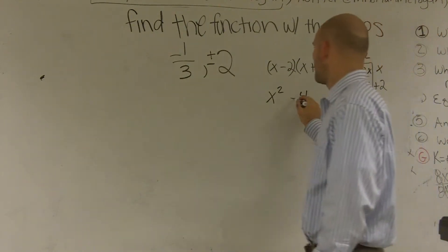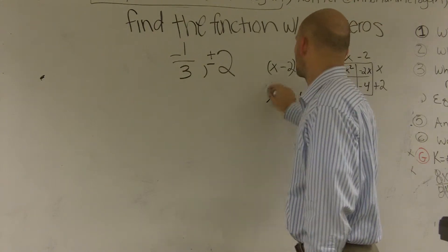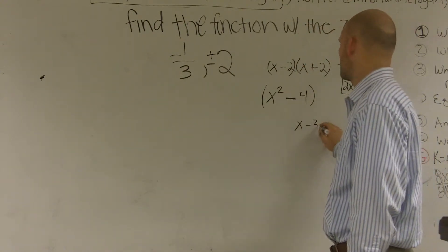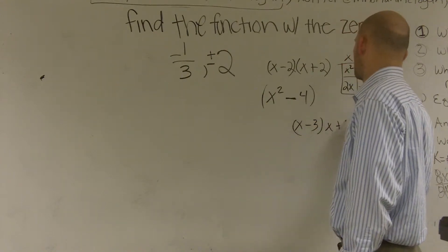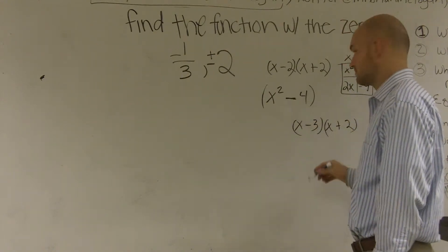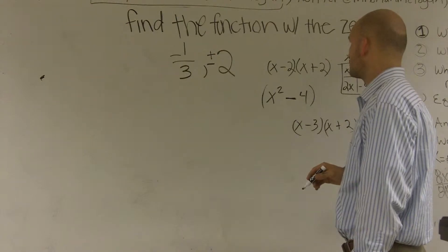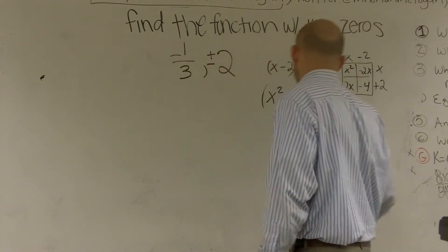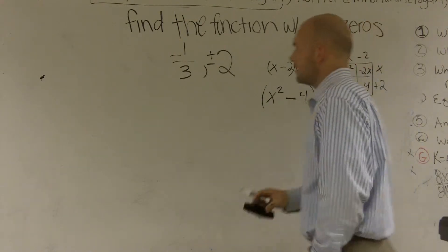When it's plus or minus a number, is it always going to be the difference of two squares? Depends if they're the exact same number. Well, when the zero is plus or minus a number, yes, it's always going to be the difference of two squares. Yep. Okay. Thank you.